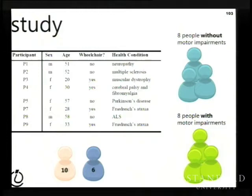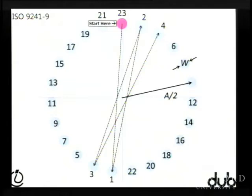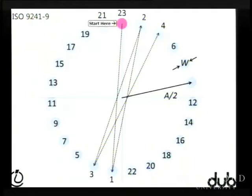We ran a study with eight people with and without motor impairments, fairly gender-balanced, using trackball and mice. Since the Angle Mouse is target-agnostic, there's no need for distractor targets, so we used the ISO standard ring-of-circles task. We found 10.3% better throughput for people with motor impairments.